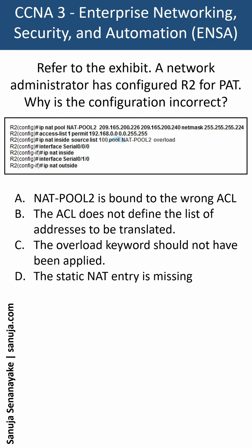The question is: why is this configuration incorrect? If you look at the configuration shown on your screen, you need to pay attention to how the NAT pools are configured. The answers are: A) NAT pool 2 is bound to the wrong ACL; B) The ACL does not define the list of addresses to be translated; C) The overload keyword should not have been applied; D) The static NAT entry is missing.